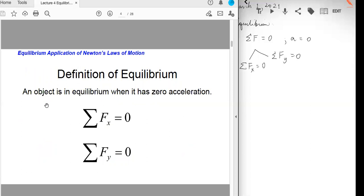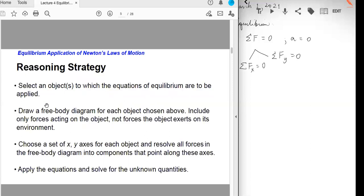Here is the definition of equilibrium. An object is in equilibrium when it has zero acceleration, which means that forces equal to zero. So when you solve problems involving equilibrium, first you have to select an object or objects to which the equations of equilibrium are to be applied. And then draw a free body diagram for each object chosen above. Choose a set of x and y axis for each object and resolve all forces in the free body diagram into components that point along these axes and apply the equations and solve for unknown quantities.